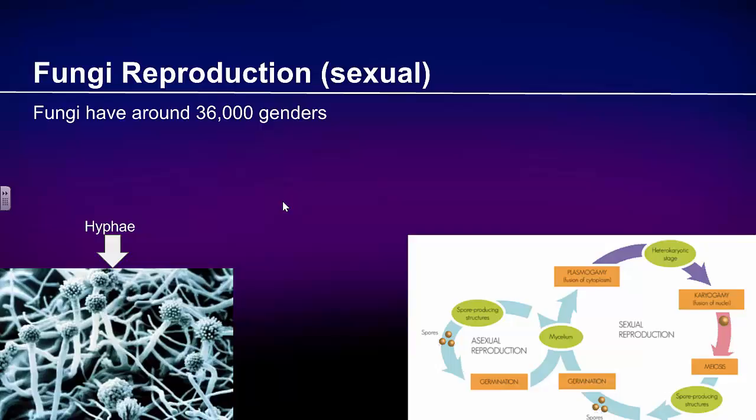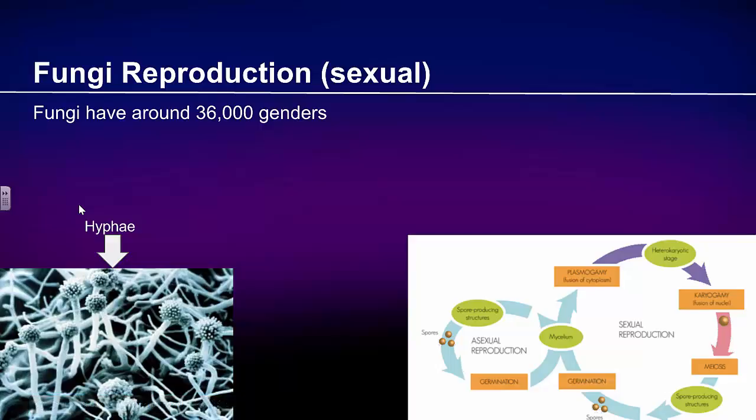Fungi also reproduce sexually. Unlike humans, fungi reproduce using their hyphae, which you can see here. They need to do this seeing as they have around 36,000 mating types to transfer. That is the reason there is so much variety among fungi.